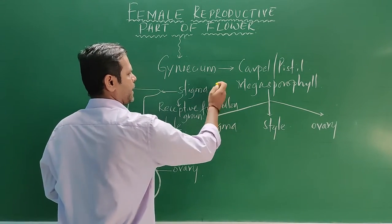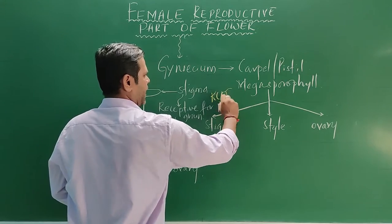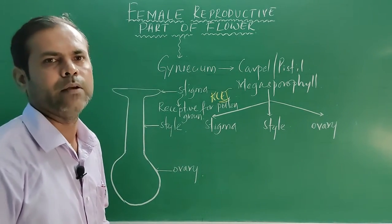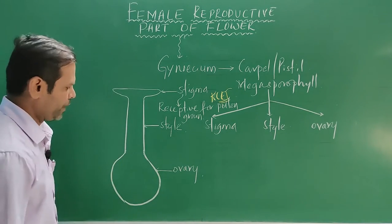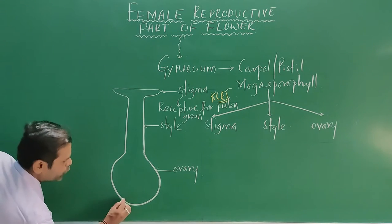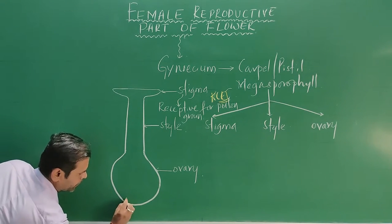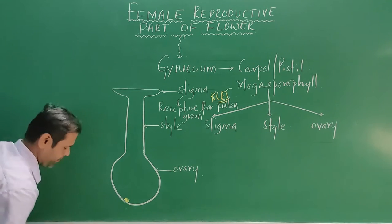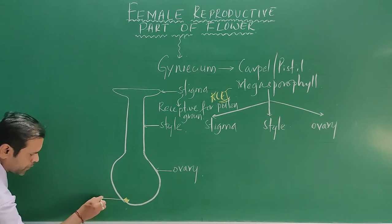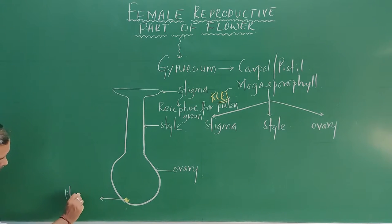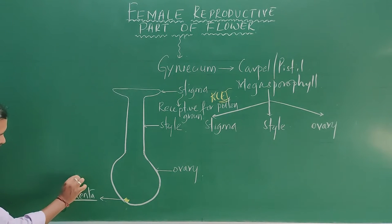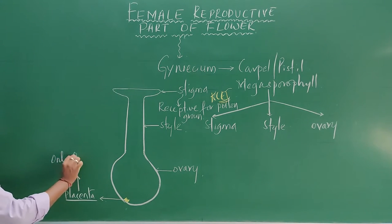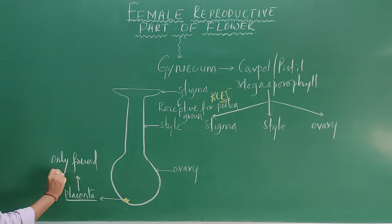This question was already asked in the Karnataka CET examination and is also in the VIVA questions for your practical examination. Inside the ovary there is a nutritive tissue present, called placenta. Remember, placenta is only found in angiosperms.